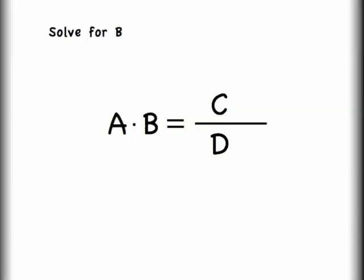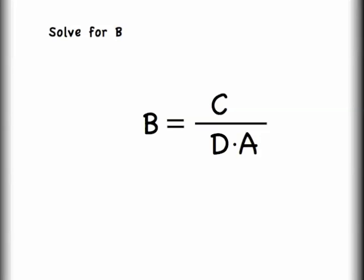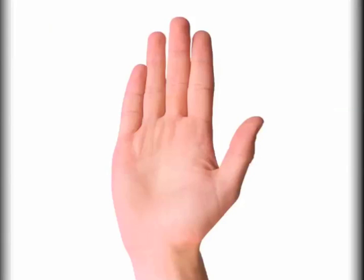For a little warm-up, let's start with the idea that I have this following equation: A times B equals C divided by D. You are asked to solve for B. Most of you would look at this and say that I need to isolate B. To do that, I need to get rid of the A. I could divide by A on both sides of the equation — that allows the A's to cancel out. I have just B on the left-hand side, and C divided by D times A on the right-hand side. That is a very valid and very good way to do things. High five!